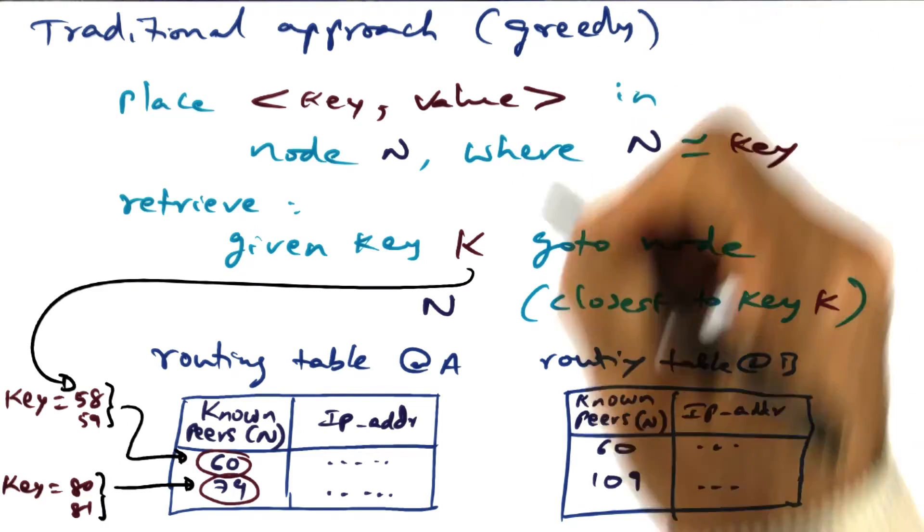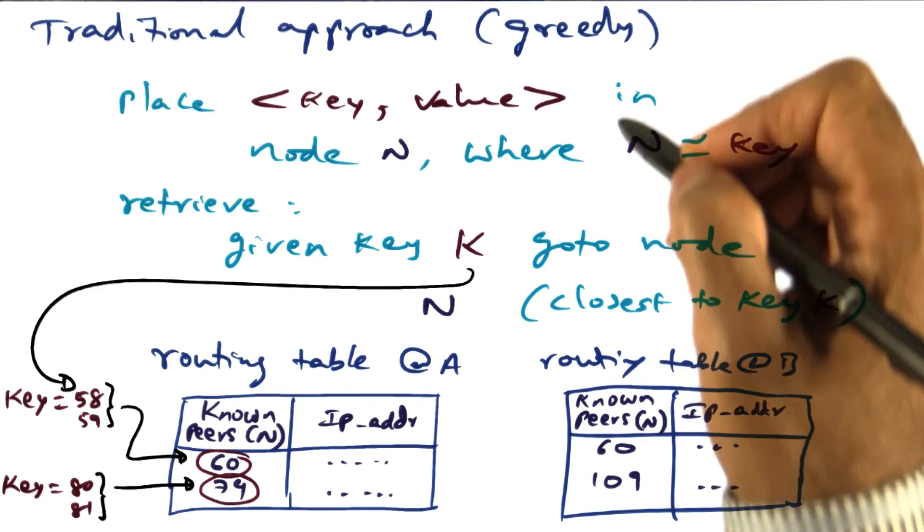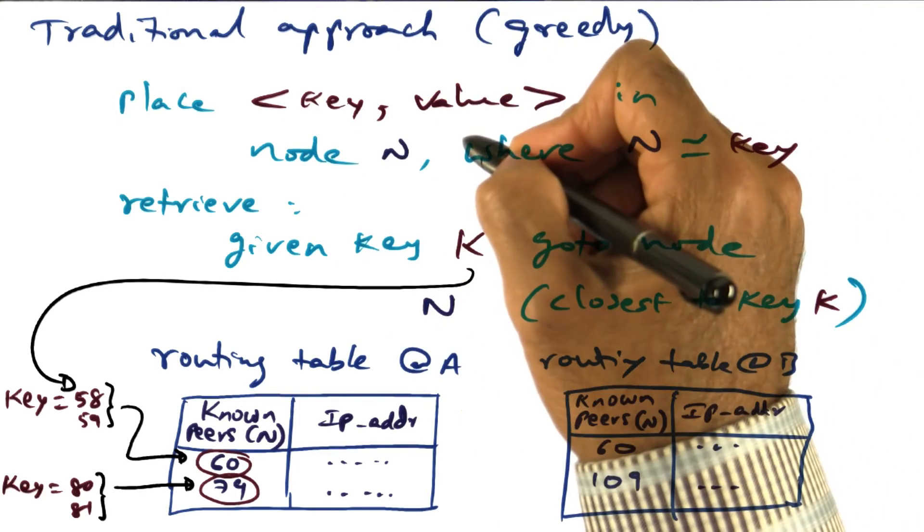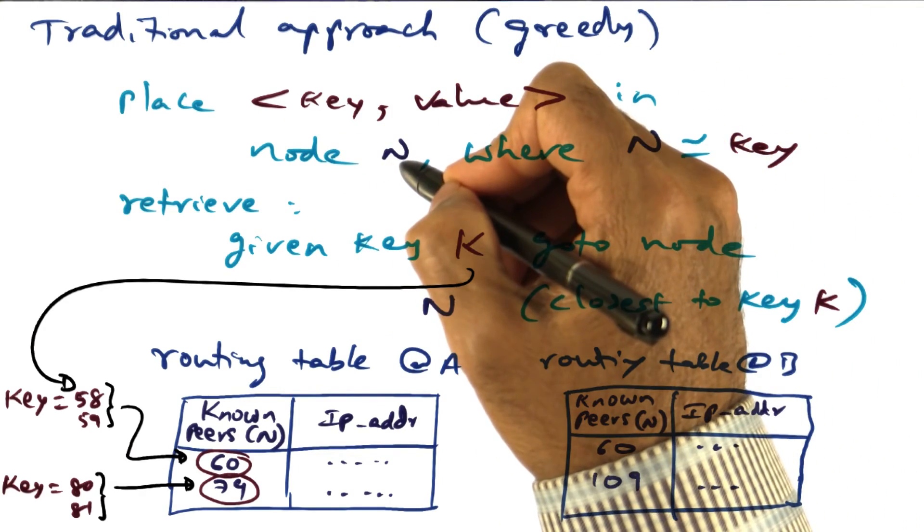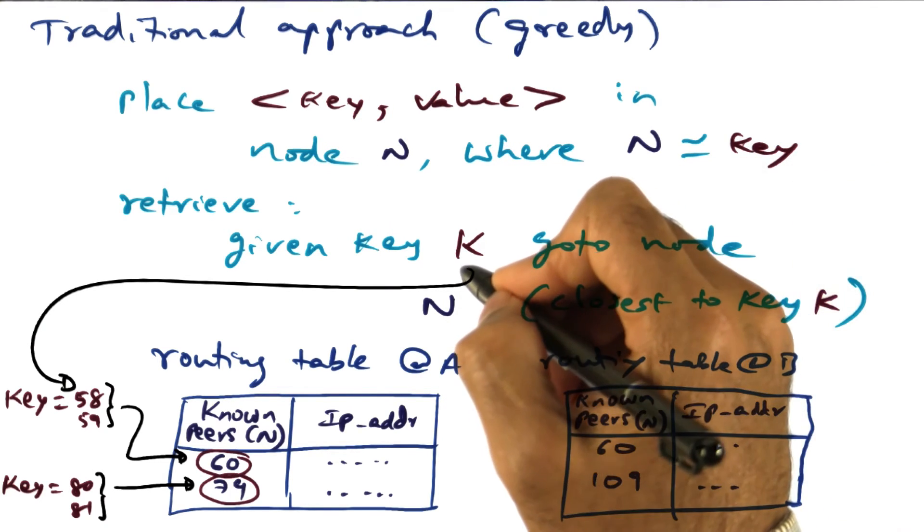So in other words, in the greedy approach, what we're going to do is, in placing a key value, we're going to place the key value pair at a node n, where n is equal to k, ideally, or close to k.